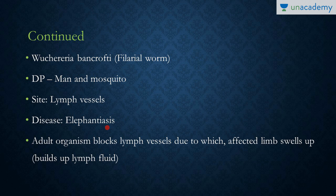The disease caused by Wuchereria bancrofti is elephantiasis. The adult organism blocks the lymph vessels, causing the affected area to swell. The worms are present inside the lymph vessels and due to their size mechanically block lymph flow. This results in lymph stasis, and the affected tissue becomes swollen.